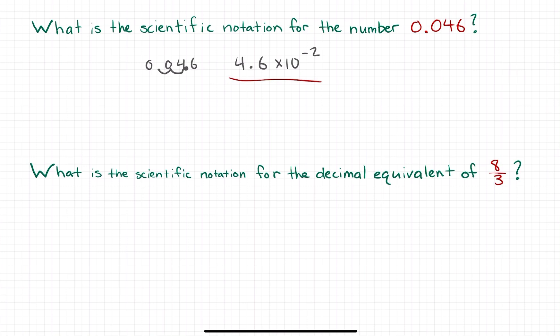You're gonna see a slightly more tricky question here on number two. What is the scientific notation for the decimal equivalent of 8 over 3? First off, we're gonna need to take that fraction 8 over 3 and convert it to a decimal, so we're gonna have to do some division.